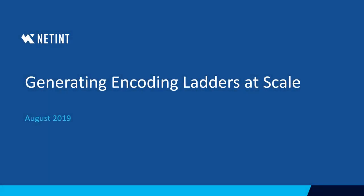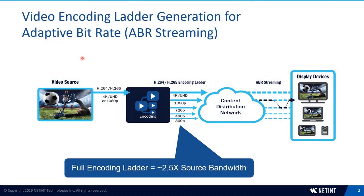Hello. This presentation is about generating encoding ladders at scale. One of the key objectives in video streaming is to take a video source and distribute it to as many different devices and consumers as possible. Those devices typically use technologies called adaptive bitrate streaming, which can select which resolution and bitrate works best for that device or network conditions. For ABR streaming to work, somewhere in the network you need to prepare what are called encoding ladders.